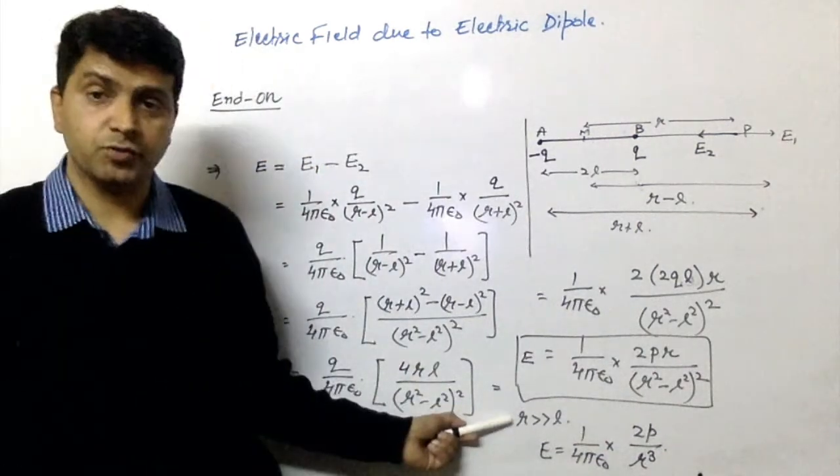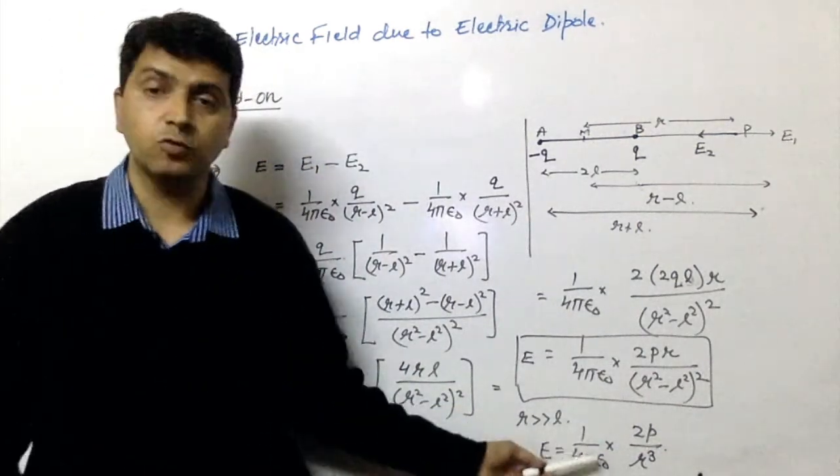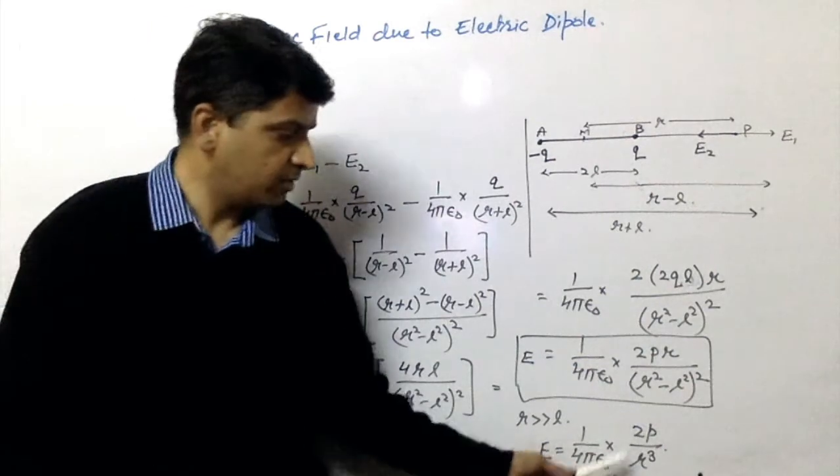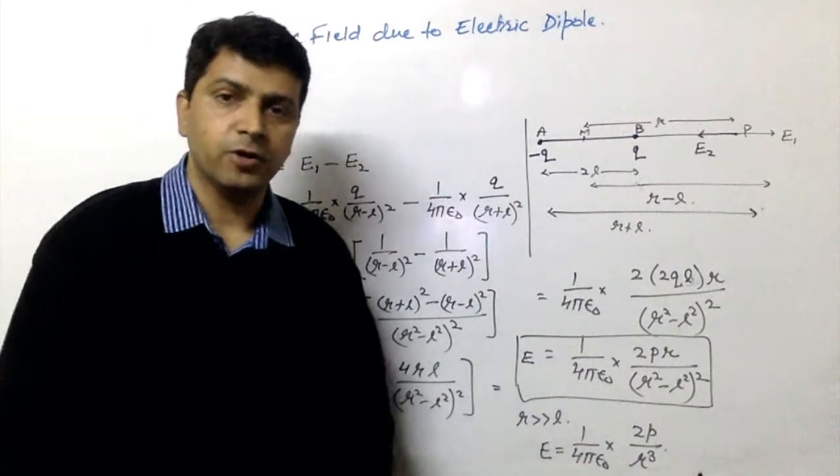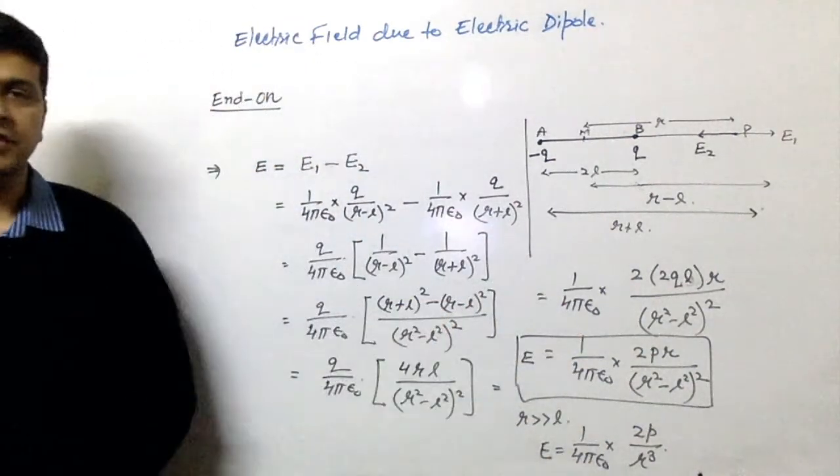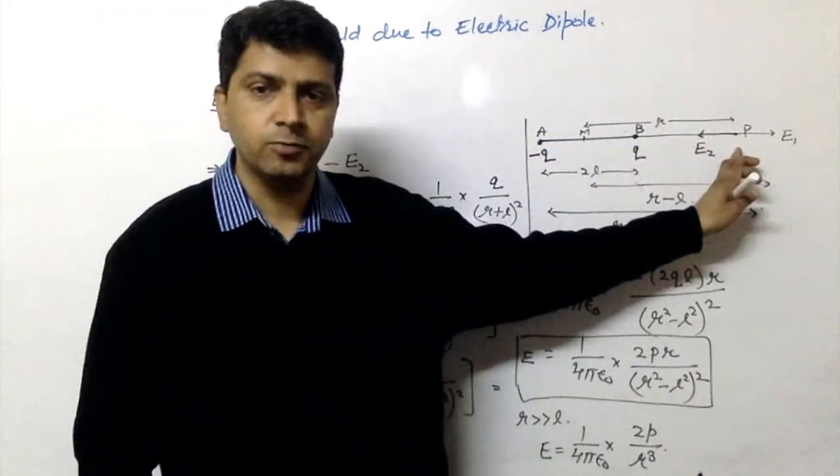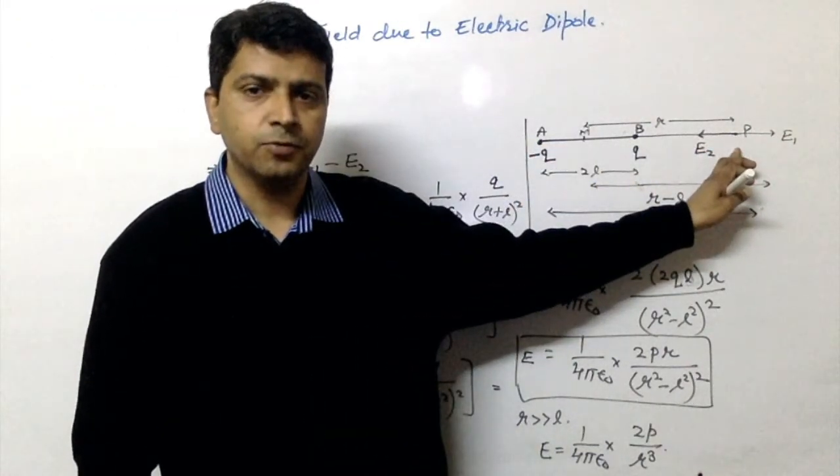So in this particular situation, we can say that E is equal to 1 upon 4 pi epsilon naught multiplied by 2P upon R cube. This way, we can derive electric field in end-on position for an electric dipole.